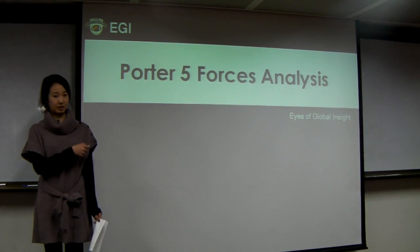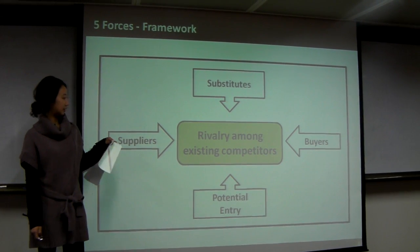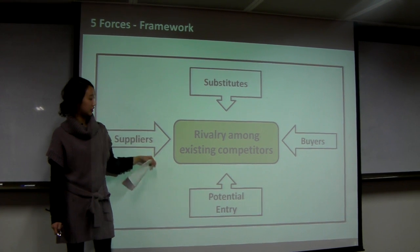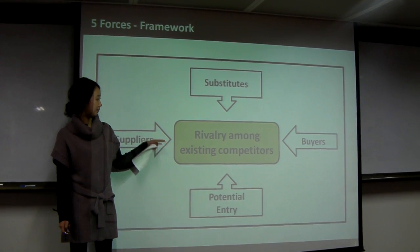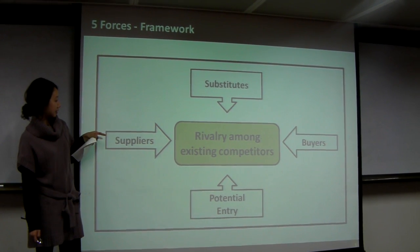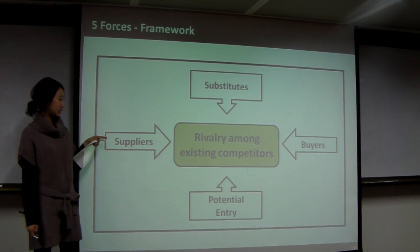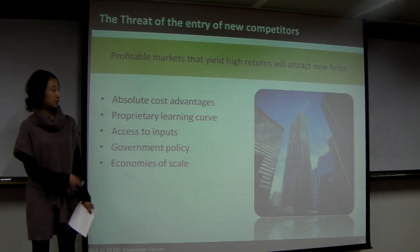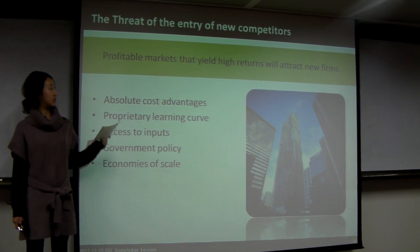There are five forces, including vertical competition: the threat of substitutes, potential entry, and rivalry among existing competitors. This model also includes horizontal competition, such as the bargaining power of suppliers and buyers. Let's see how each factor affects each force.